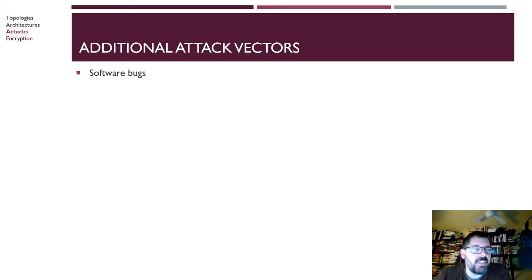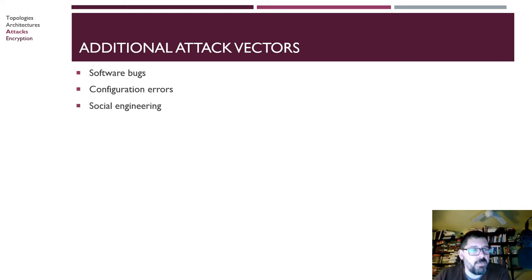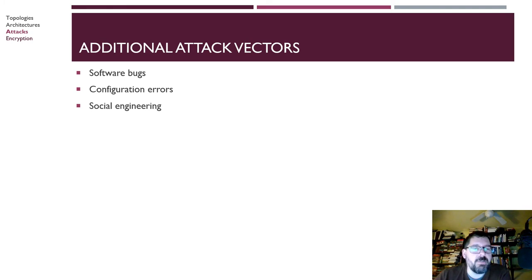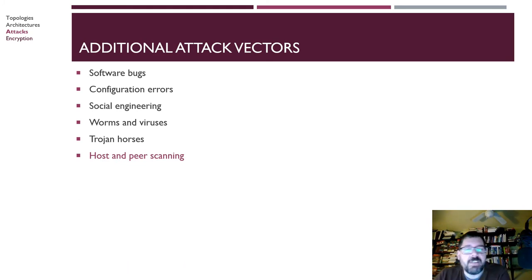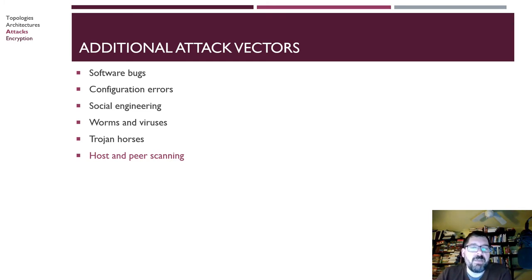Additional attack vectors include software bugs, configuration errors — like forgetting to re-enable a firewall after testing — social engineering attacks where no technology can stop users from giving away passwords, worms and viruses, Trojan horses, and host and peer scanning. The tools we'll look at in the lab can be used against us. We can use them to evaluate our own network security, but attackers can use them against us too. It's important to know these tools exist and what people can do with them.